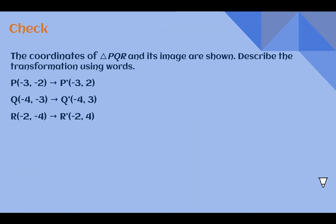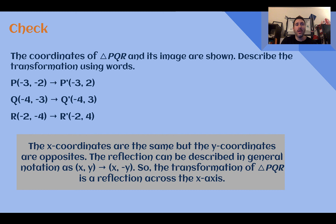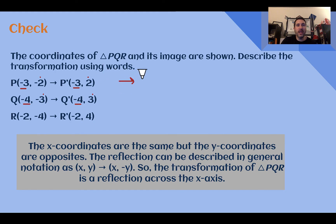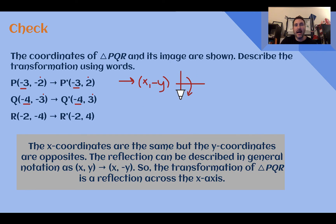Check your understanding — describe the transformation using words. Pause the video now and complete the check. Check your answer. If we look closely, the x-coordinates are the same but the y-coordinates are opposites. So in our coordinate notation, we would say same x, opposite y. Therefore it must have reflected over the x-axis. This would be a reflection over the x-axis.